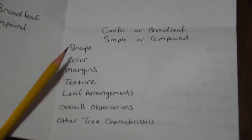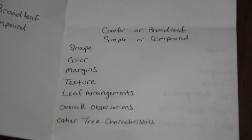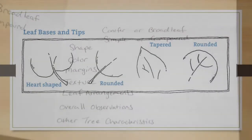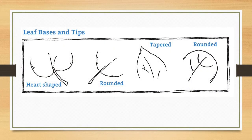The next thing we're going to take a look at is shape. The overall shape of the leaf gives clues to the identity of the tree — they can be long or slender, or oval shaped. Needles also come in different shapes; some are flat and others are rounded. The tips of leaves may be notched, pointed, rounded, tapered, and so on.